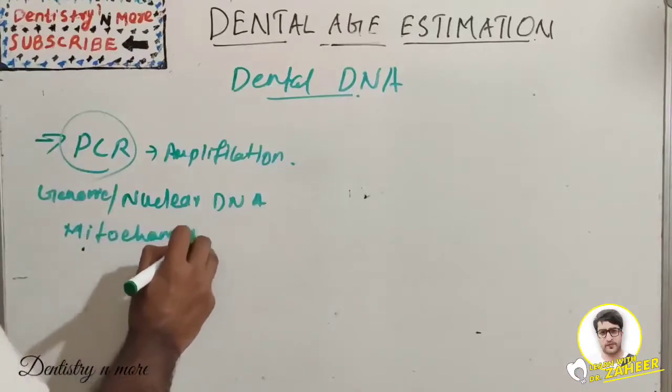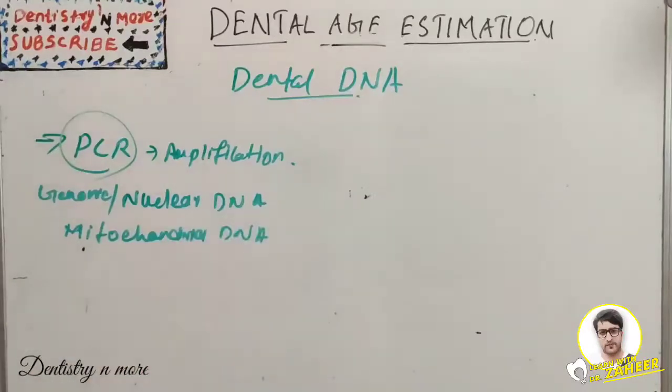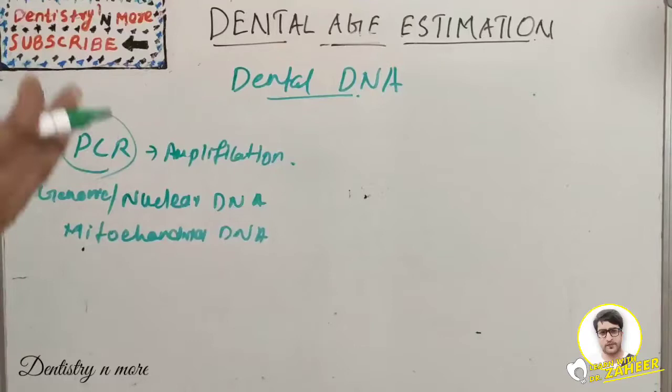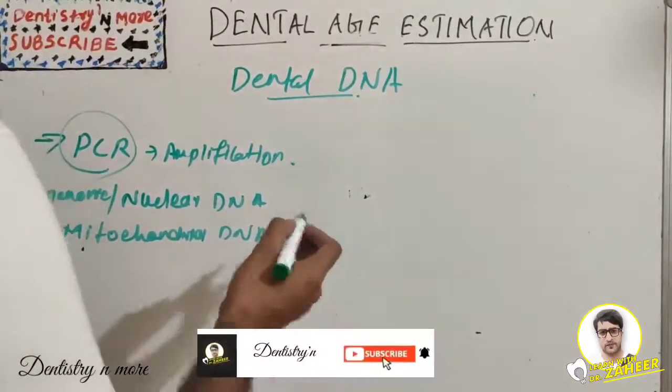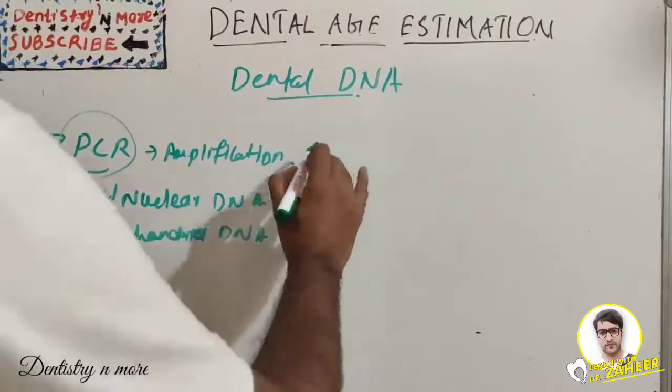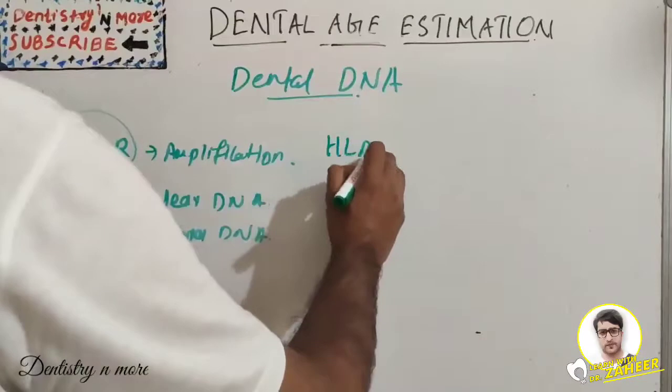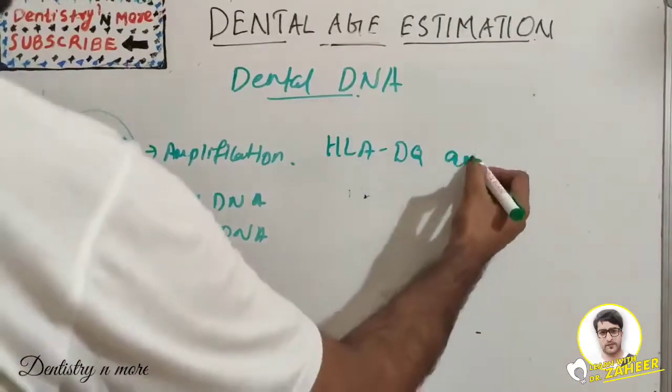How do we extract dental DNA? The tooth pulp is considered the best source of dental DNA. This dental DNA can be extracted and used for personal identification using HLA-DQ amplification method.